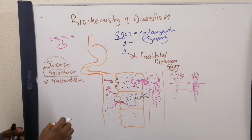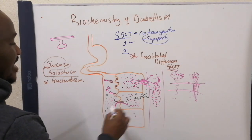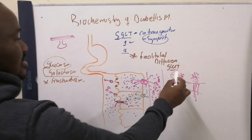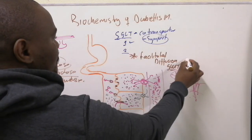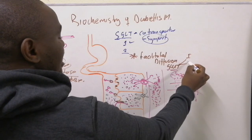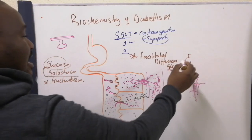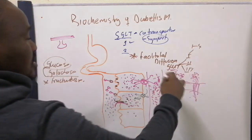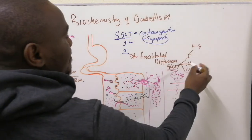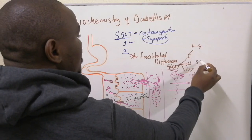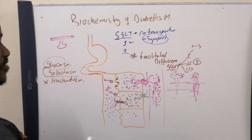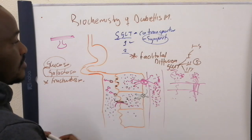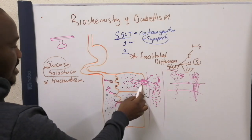Fructose is different. Fructose exits through GLUT5. There are different types of GLUTs — class one includes GLUT1 to GLUT4, and class two includes GLUT5, GLUT7, GLUT8, and GLUT9. The special one we focus on is GLUT5 because it allows fructose to exit the enterocyte into the blood. Glucose and galactose use GLUT1 on the basolateral membrane.